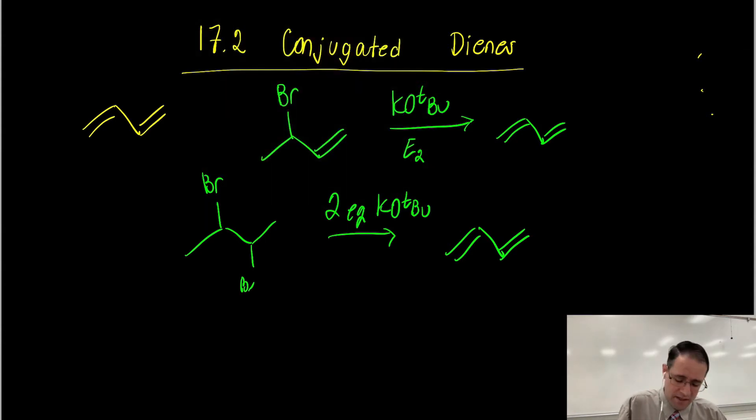And before I jump too far ahead, let me just say how you would name this. Going back to the alkene chapter, we name alkenes based on the starting number of the carbon. So there's an alkene at carbon one, and of course the next carbon higher, and three, and the next carbon higher. So we would call this 1,3-butadiene.